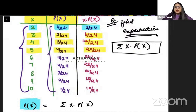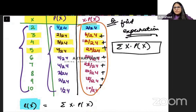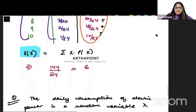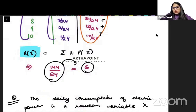Once I get each x·p(x), I will add all of these together. When I add all of these, I get 144/24, which gives the answer as 6. So the expected value of the sum when rolling a 6-sided and a 4-sided die is 6. This is how you can go ahead and solve this kind of question.